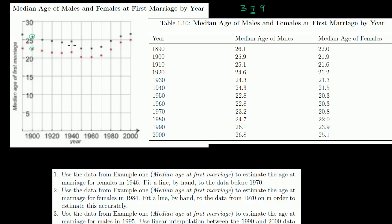As we went through the century, those ages got lower and lower until about 1960. It's interesting to see this trend: at the beginning of the century, people got married at ages similar to today, but there was a minimum around the 1960s when people married younger — true for both males and females. You can also see that the age difference between the median male and median female has gotten smaller and smaller over time.